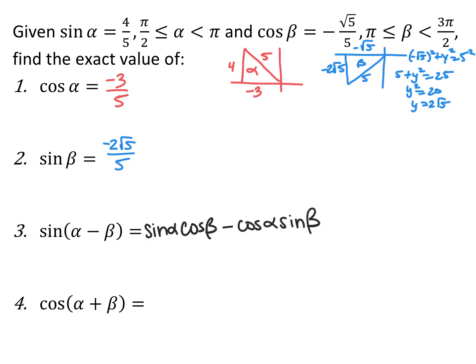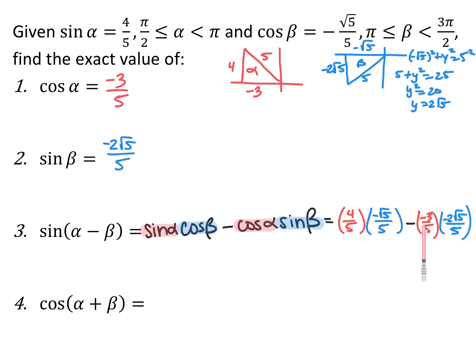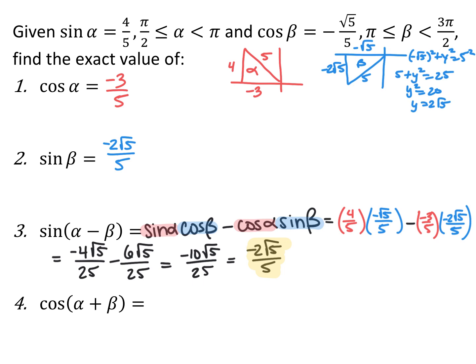Now I can apply the sine difference formula. Sine of alpha minus beta equals sine alpha cosine beta minus cosine alpha sine beta. I don't know alpha and beta themselves, but I can evaluate each piece from the triangles: sine alpha is 4/5, cosine beta is −√5/5, cosine alpha is −3/5, and sine beta is −2√5/5. So: 4/5 times −√5/5 gives −4√5/25, and −3/5 times −2√5/5 gives +6√5/25, which we subtract. The result is −10√5/25, or −2√5/5.